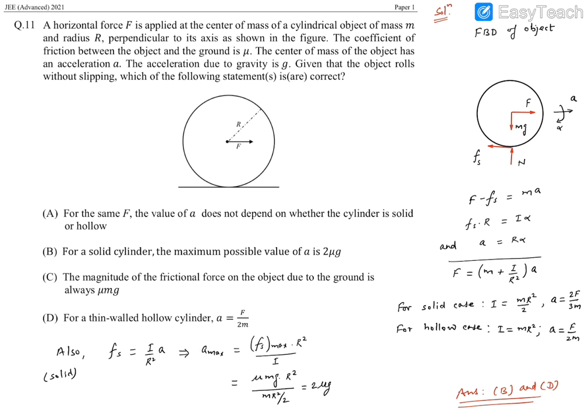So a_max is f_s max times R² divided by I. For solid cylinder, moment of inertia is mR²/2. R² will disappear. Static friction's maximum value is μ times normal reaction, which is μmg.